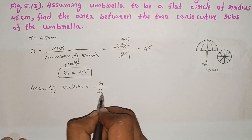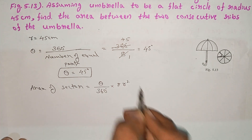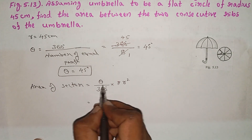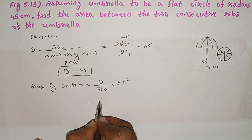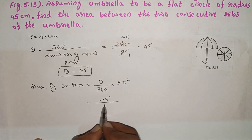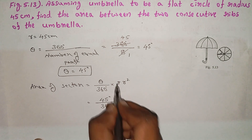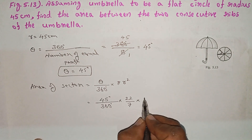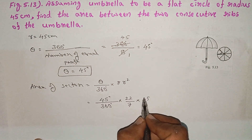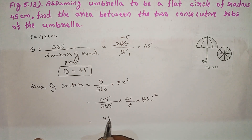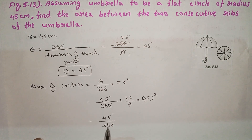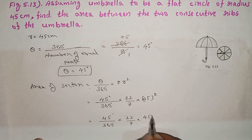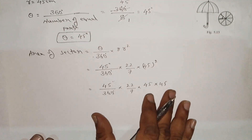Area of sector formula: theta divided by 360 degrees, into pi r squared. Angle of sector is 45 degrees divided by 360 degrees, into pi value 22 by 7, into 45 squared. Next step: 45 divided by 360, into 22 by 7, into 45 into 45.